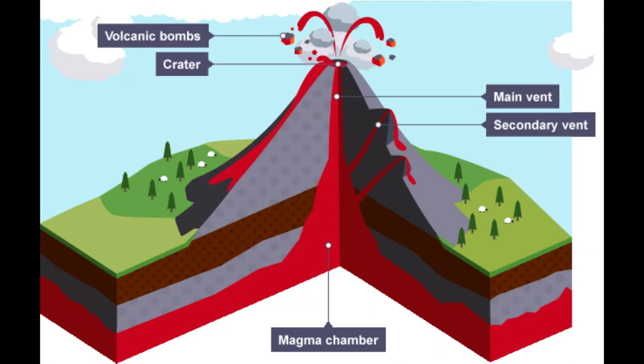At the very top we have the crater. This is where the eruption usually happens. When volcanoes erupt there can be lava, ash, steam or gas emitted. It's really important to note that when molten rock is inside a volcano it's called magma, and outside it's called lava.